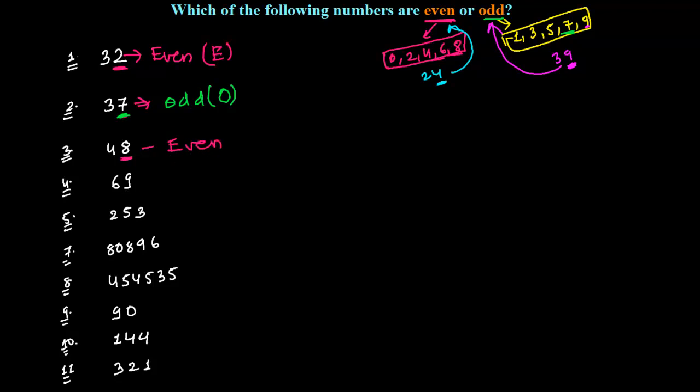Now another number is 69. So 9 is here in the odd group. That's why I can say this is an odd number.